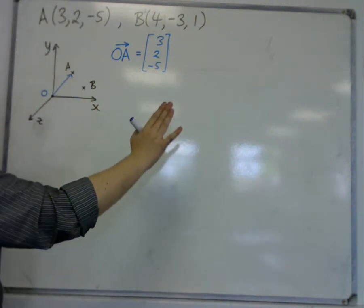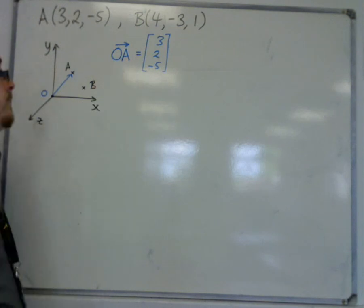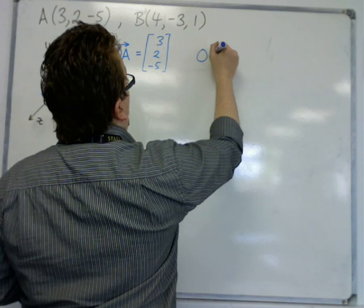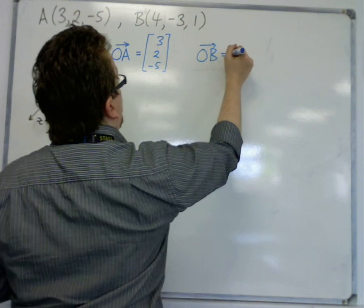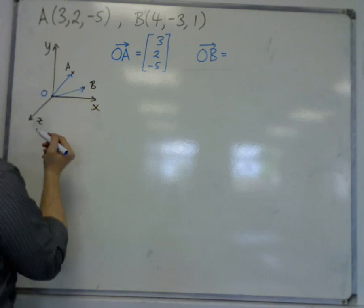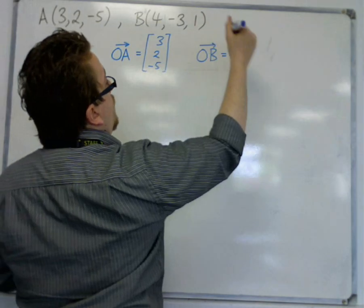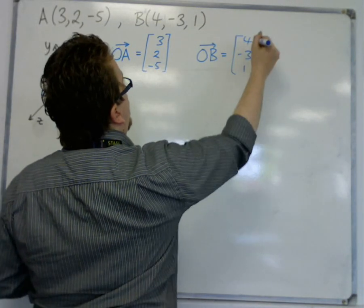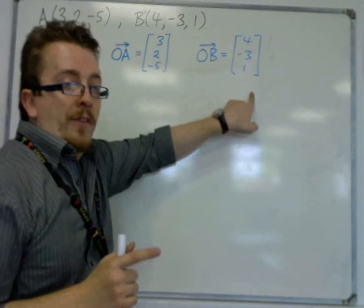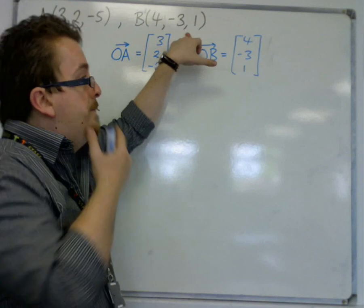And that's equal to (3, 2, -5) because it describes how I get from O to A: 3 in the x direction, 2 in the y direction, and minus 5 in the z direction. Likewise, I can have OB, a vector going from O to B. This would be (4, -3, 1). Notice how they have the same numbers, but this is the vector and this is a coordinate.